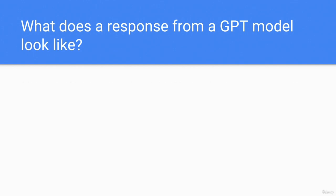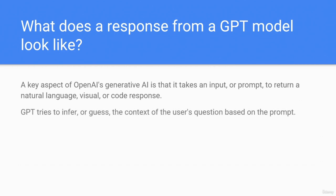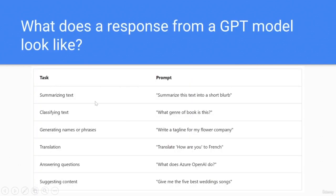A key aspect of OpenAI's generative AI is that it takes an input or prompt and returns a natural language, visual, or code response. GPT tries to infer the context of the user's question based on the prompt. GPT models are great at completing several natural language tasks, including: summarizing text, classifying text, generating names or phrases, translation, answering questions, and suggesting content.